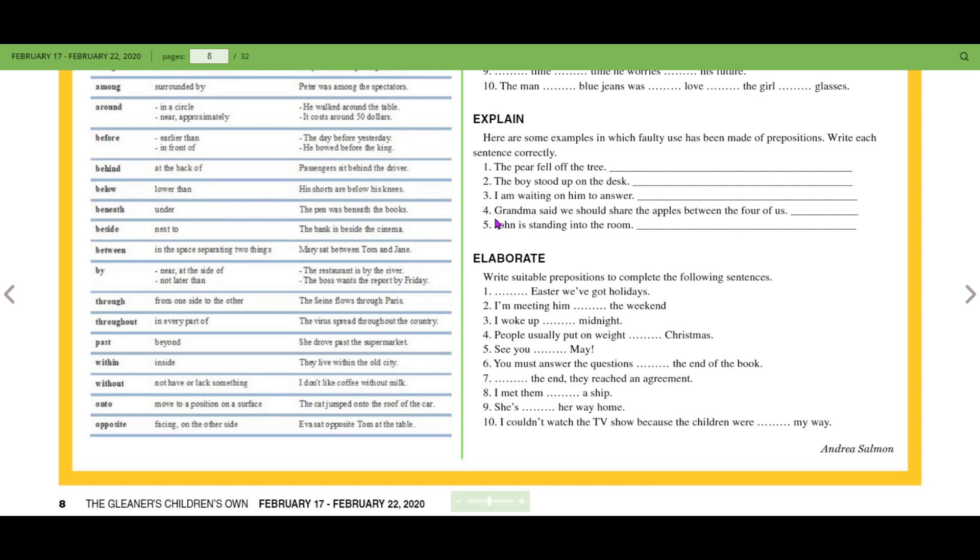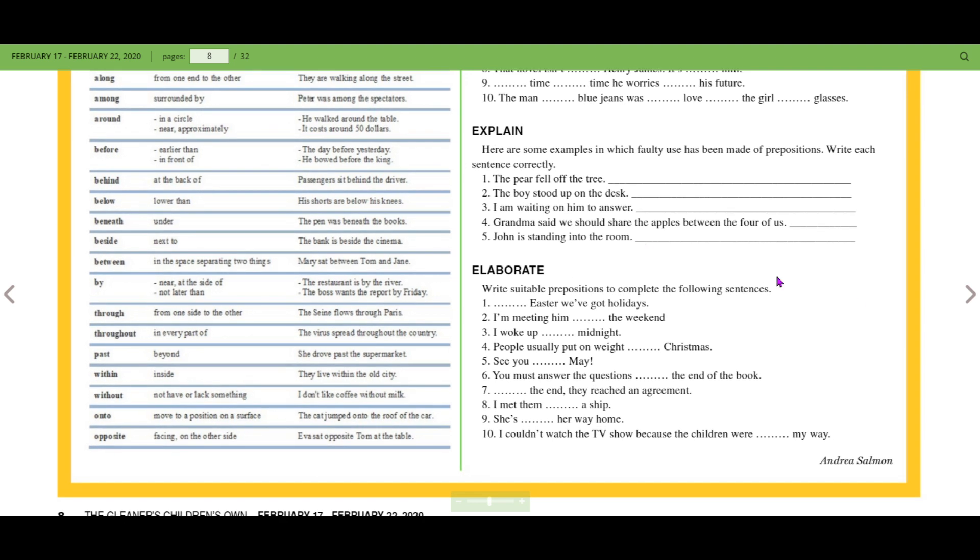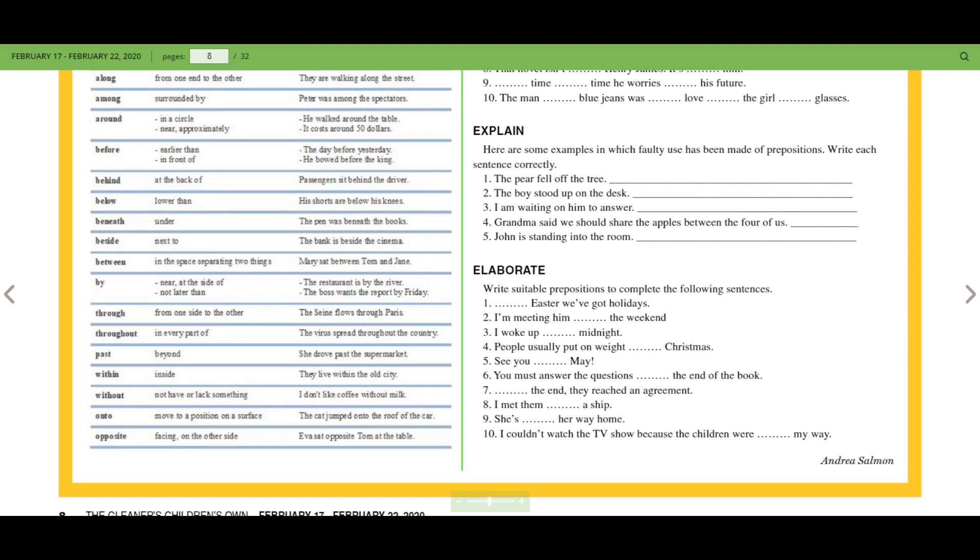I can quickly tell you for four and five. If we're going to say four of us, we won't use between. Between should be used for two persons only. So we would use among. John is standing into the room. Now the preposition into shows movement from one place to the next, but the preposition in shows place, one specific place. So he's standing in the room. But we could say he walked into the room, meaning he was outside of the room and then he came into the room, he moved into that space.